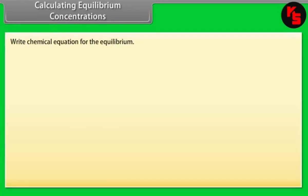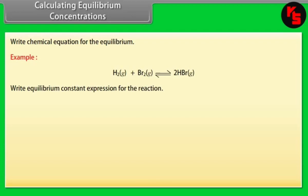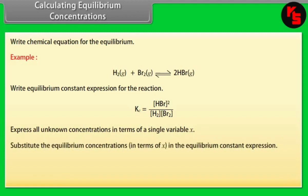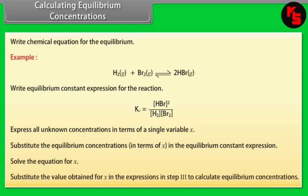Calculating Equilibrium Concentrations. Steps: write the chemical equation for the equilibrium; write the equilibrium constant expression; express all unknown concentrations in terms of a single variable X; substitute the equilibrium concentrations in terms of X into the equilibrium constant expression; solve the equation for X; then substitute the value of X back into the expressions from step 3 to calculate equilibrium concentrations.